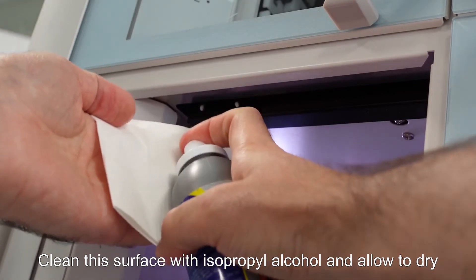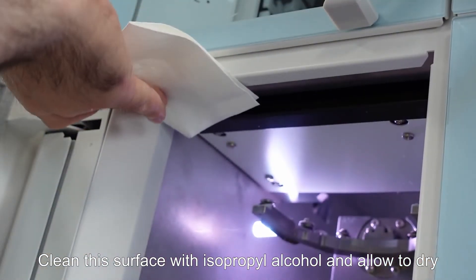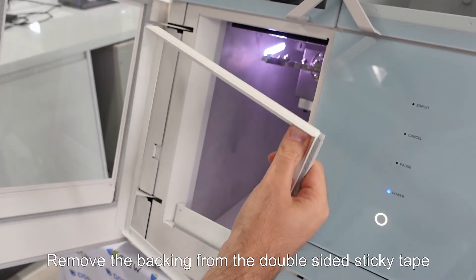Clean this surface with isopropyl alcohol and allow to dry. Remove the backing from the double-sided sticky tape.